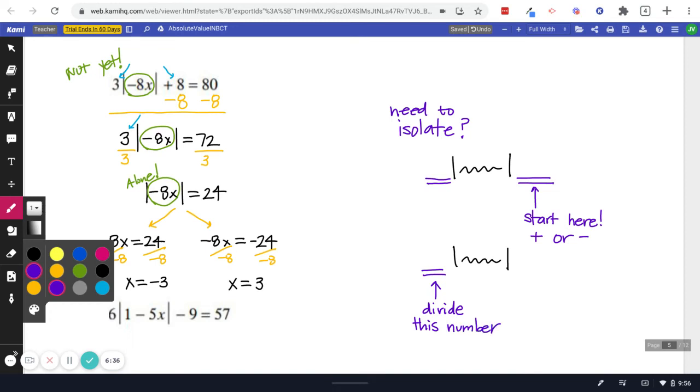Then divide this number. So our process is to first add or subtract. You might not have to do that, but if you need to, that's a good starting point. Then divide. Okay. Those are kind of the process we're going to follow. Those are going to get us pointed in the right direction. Those are going to clear out the absolute value the way that we need it to.